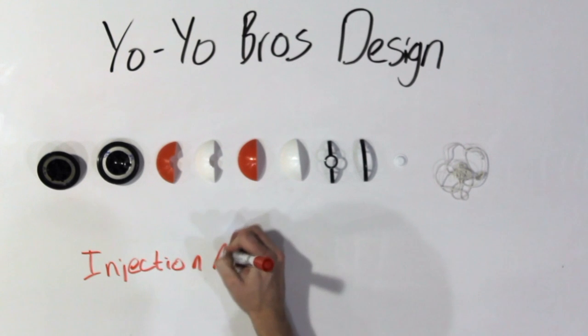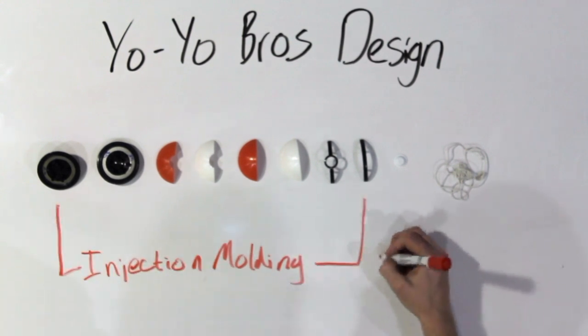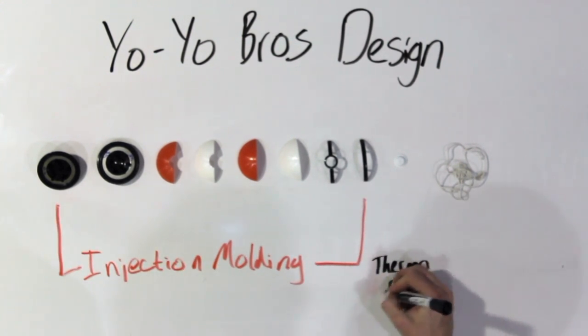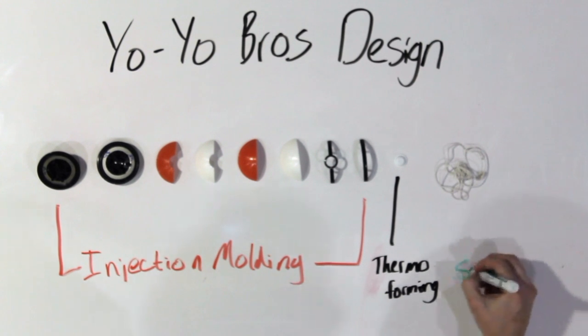Our design required five unique core molds and two cavities to complete the five distinct injection molded parts. Our thermoform part is the push button for the center of one face of the yoyo. And, of course, there's a string.